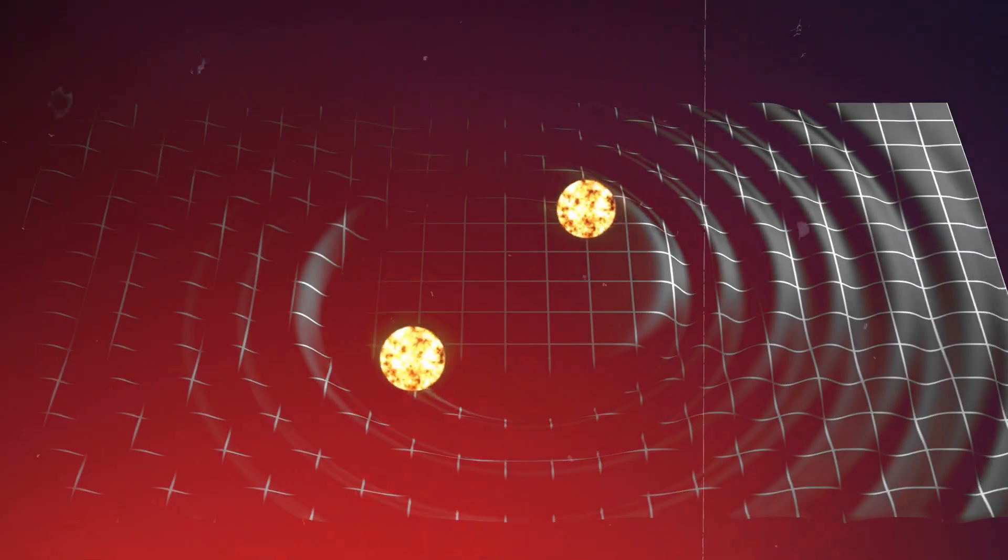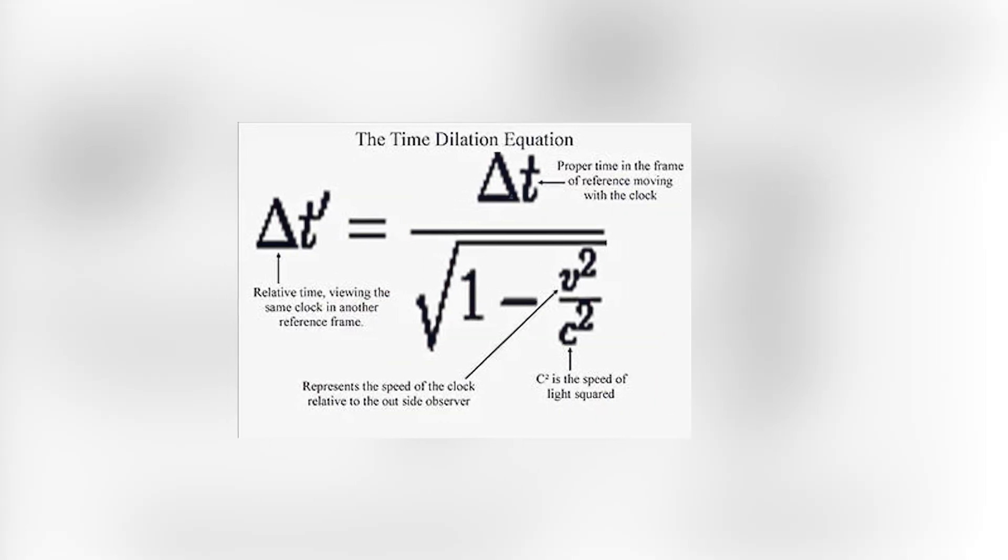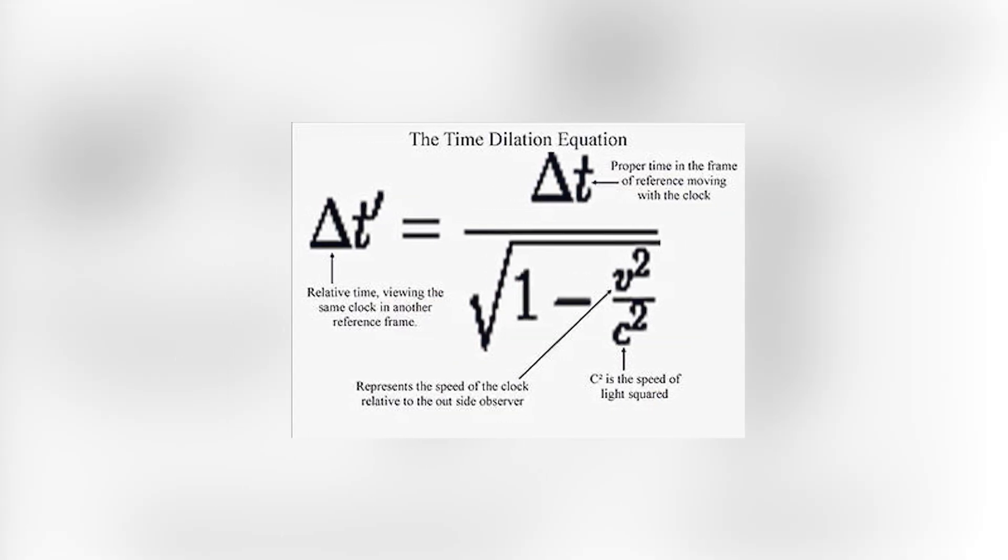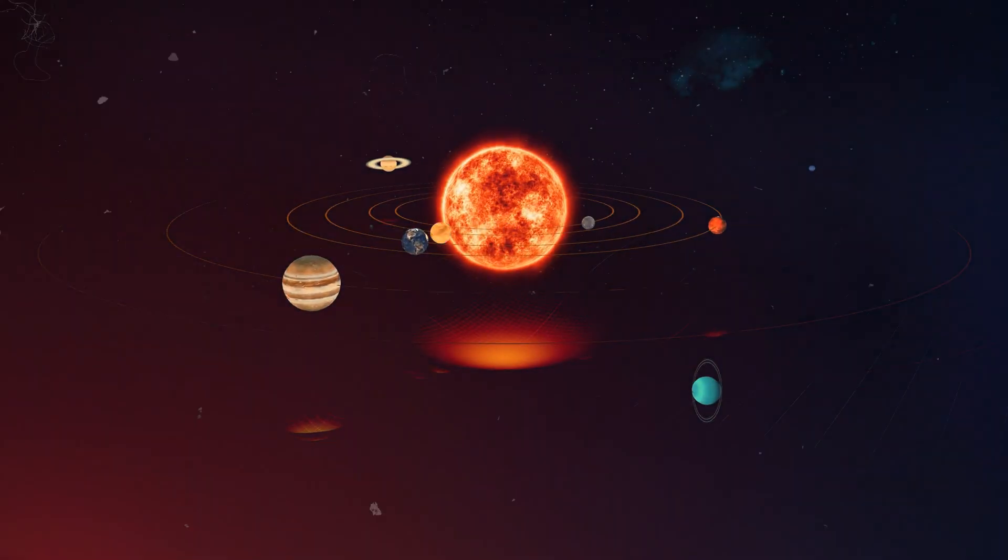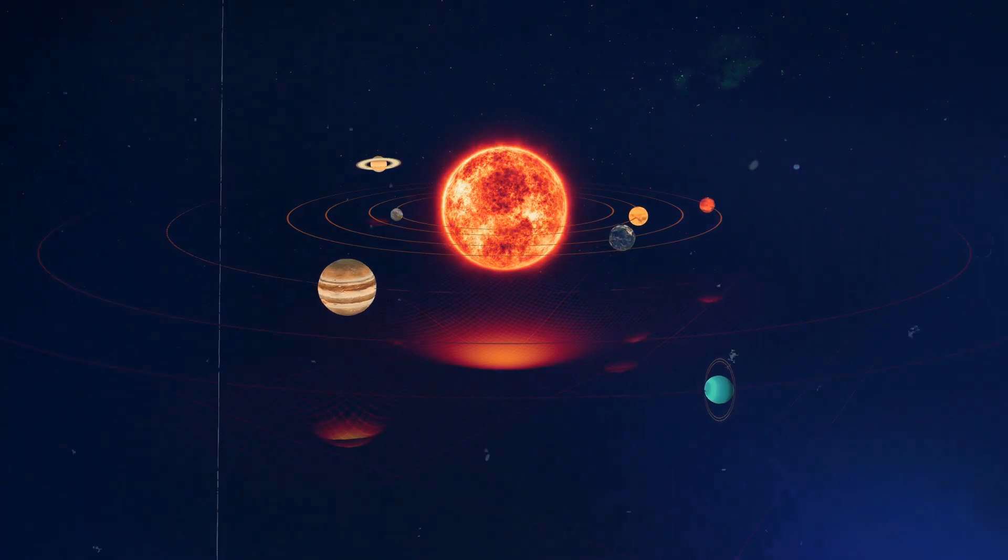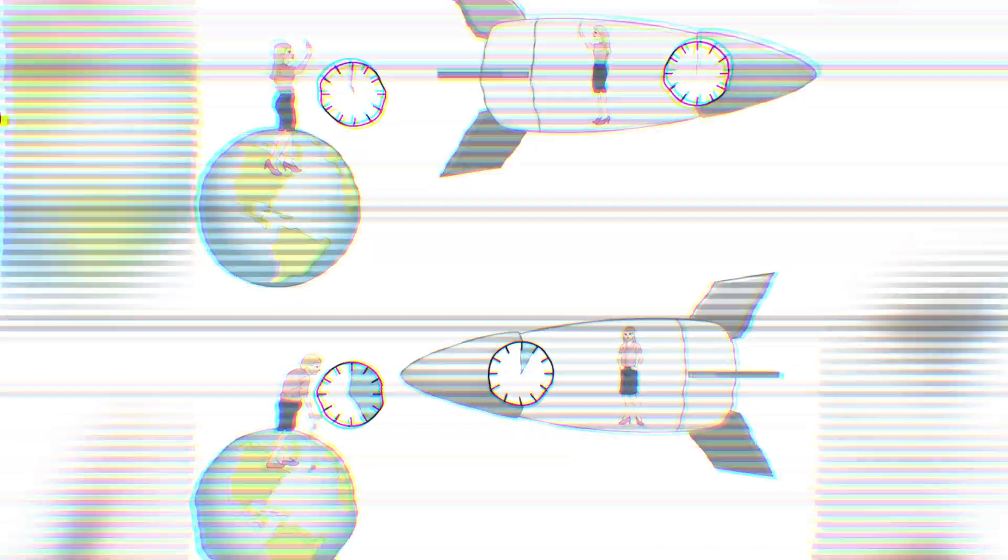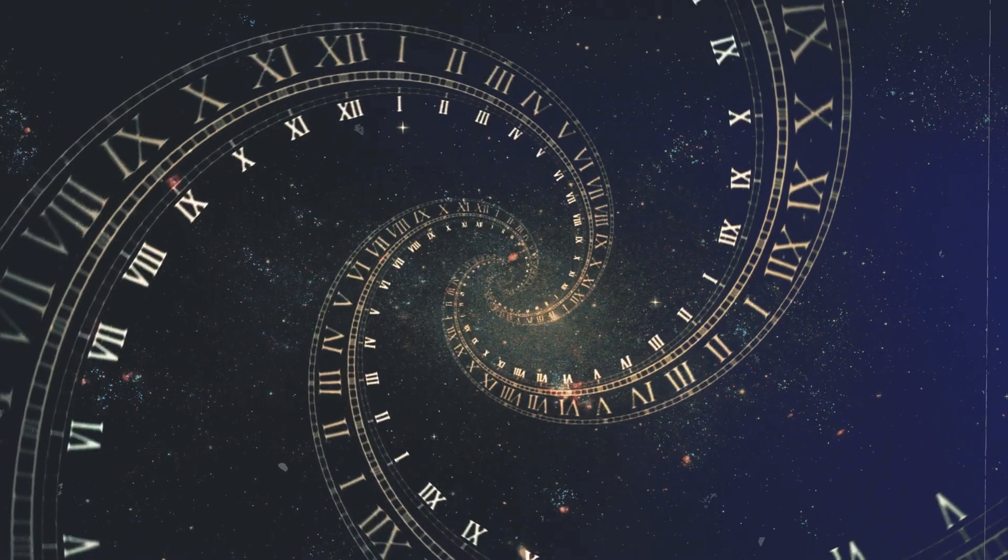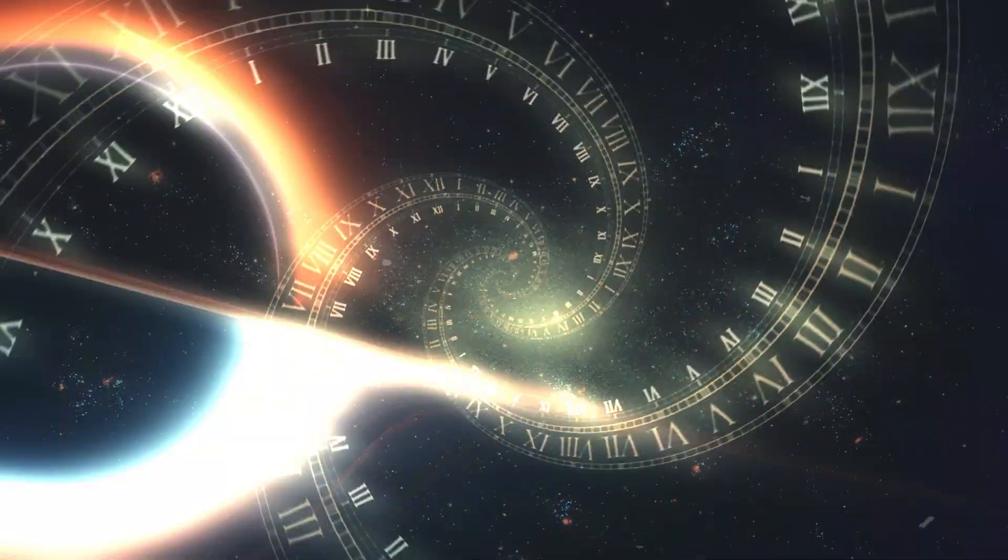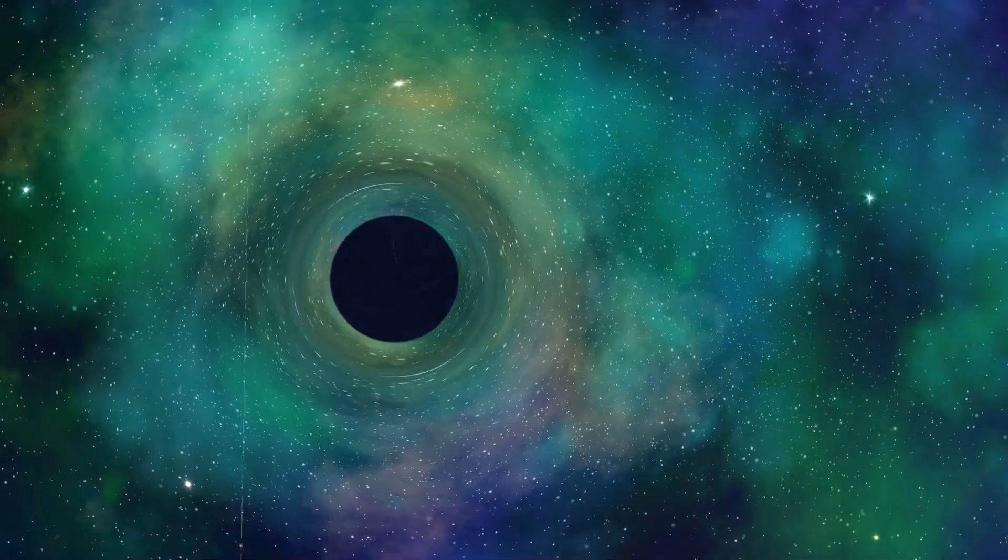One consequence of relativity is time dilation, where time passes differently for observers moving at different speeds or experiencing different gravitational potentials. For example, a clock on a fast-moving spaceship will tick slower relative to a stationary observer on Earth. Similarly, clocks in stronger gravitational fields, such as near a massive planet or black hole, will tick slower than those in weaker fields.